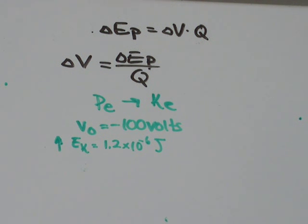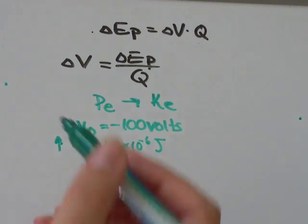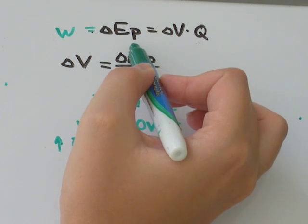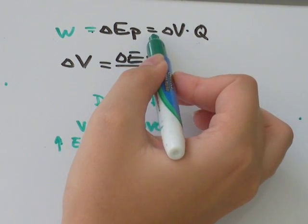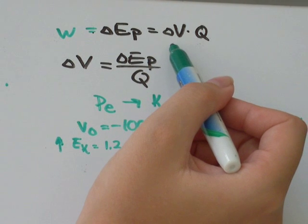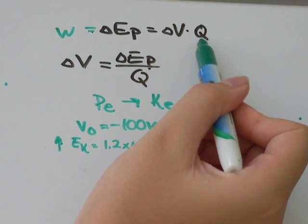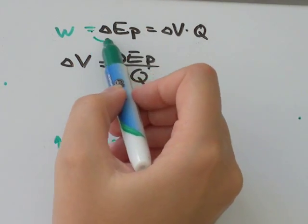The first thing to notice is that work is equal to the change in electric potential, and the change in electric potential is equal to the change in voltage times the magnitude of the charge. If we rearrange just this part of the formula,